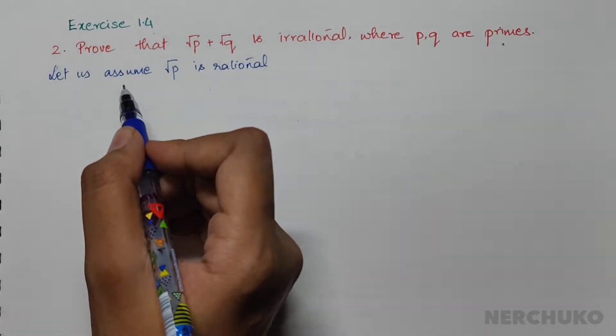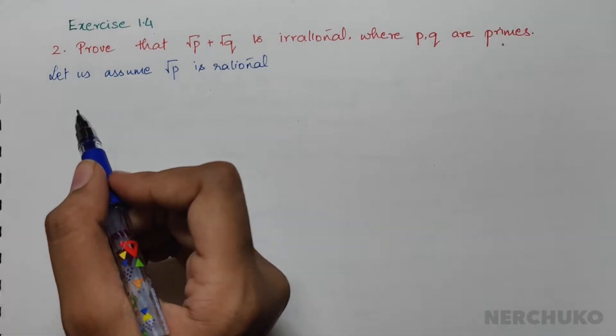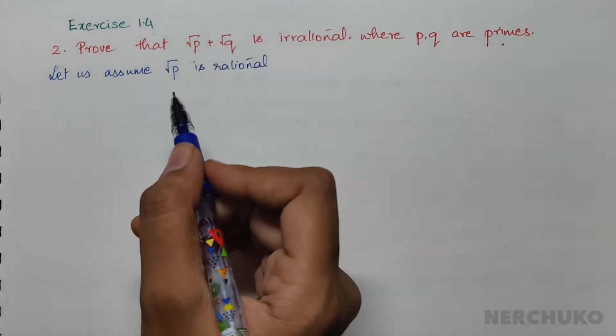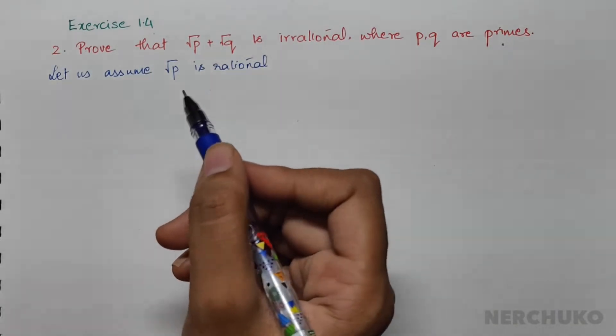If the number is rational, it can be represented in the form of a by b, where a and b are coprimes and they do not have a common factor other than 1.